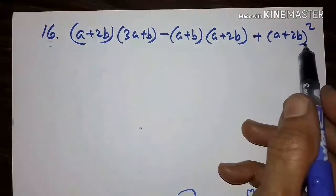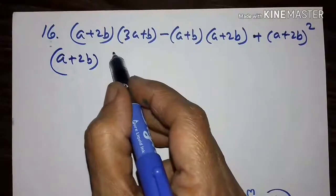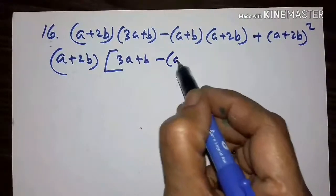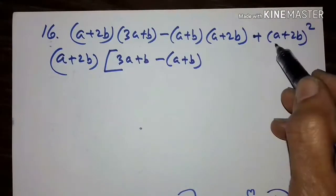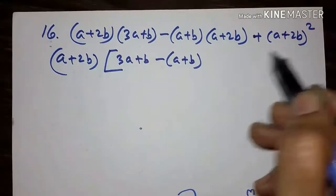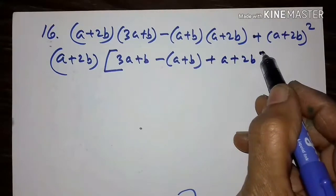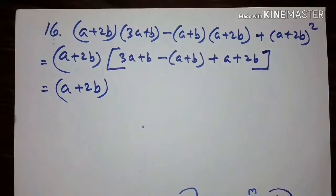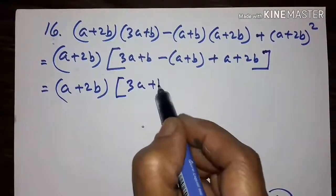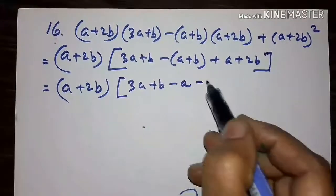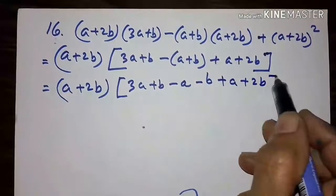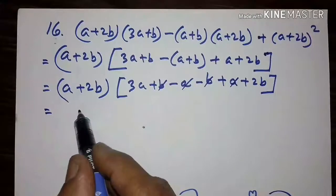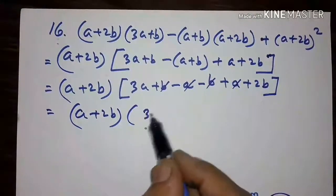In the next problem, A plus 2B is common. Let us take it out: A plus 2B. What remains is 3A plus B. Then A plus 2B has gone out, minus A plus B. This is A plus 2B into A plus 2B, therefore A plus 2B has gone out, so A plus 2B remains, plus A plus 2B. When we solve this we get 3A plus B, minus into plus equals minus A, minus into plus equals minus B, plus A plus 2B. Here plus B and minus B cancel, minus A and plus A cancel, leaving 3A plus 2B. This equals A plus 2B into 3A plus 2B.